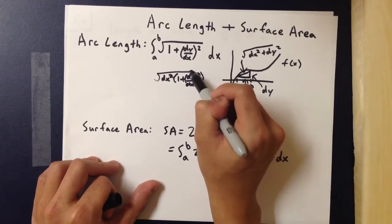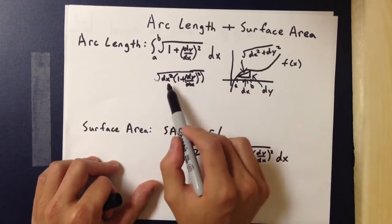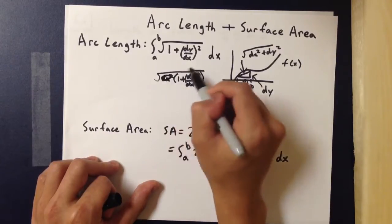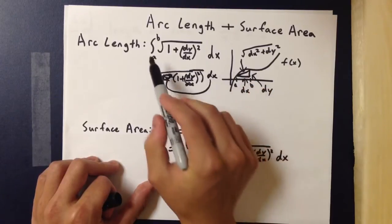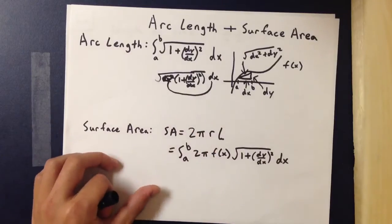And since that is under the square root, you could take out the dx² and that results in the equation that we have above. And then we just need to integrate that from a to b to find the arc length.